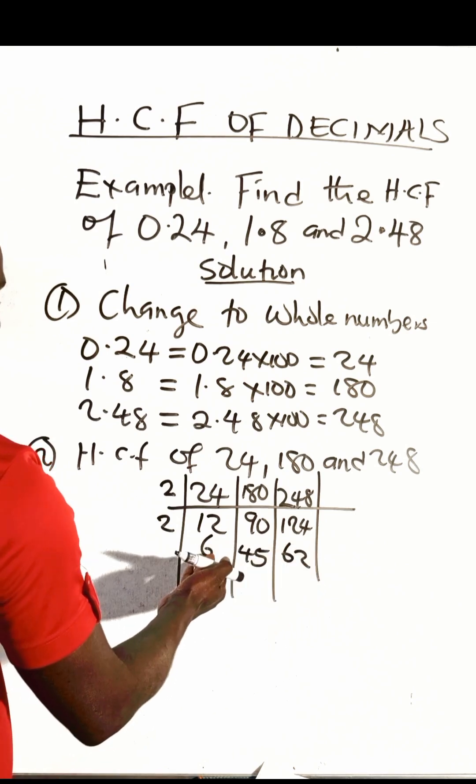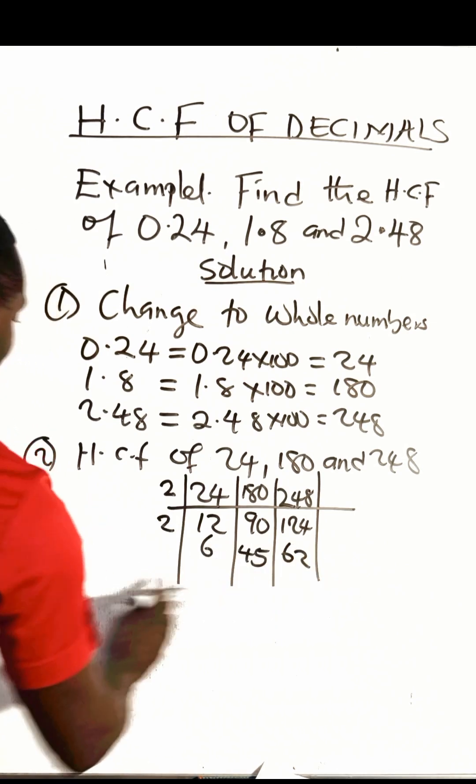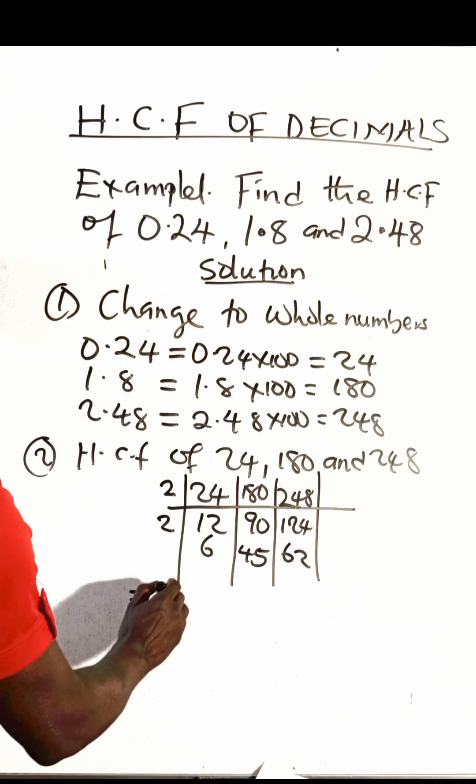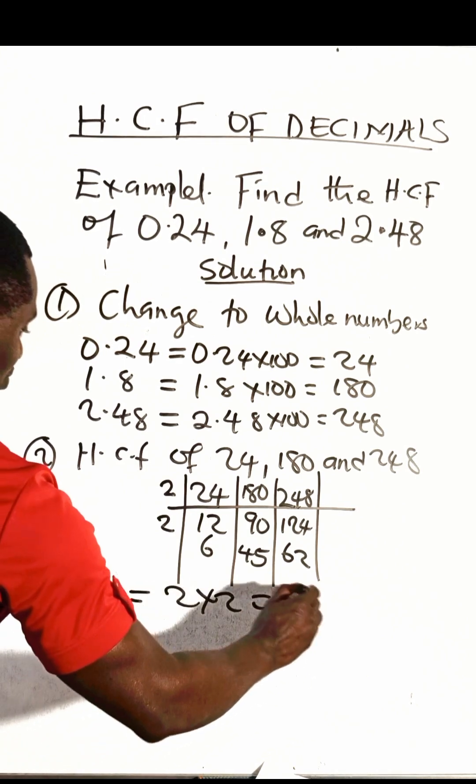No number can divide 6, 45, and 62, so the HCF is just 2 times 2, which gives us 4.